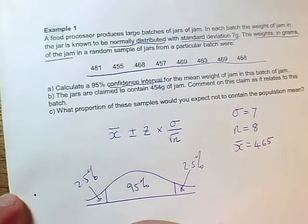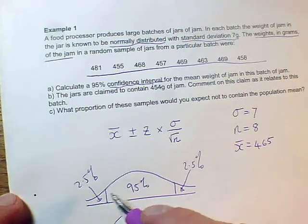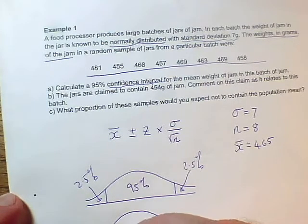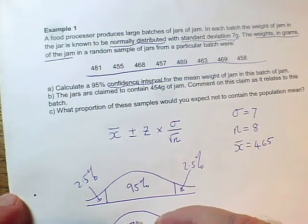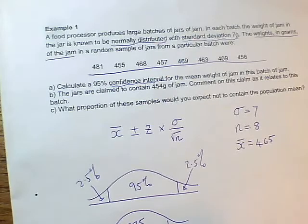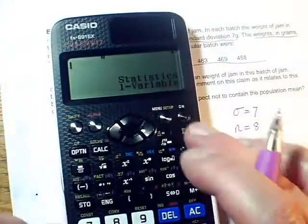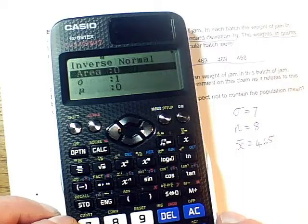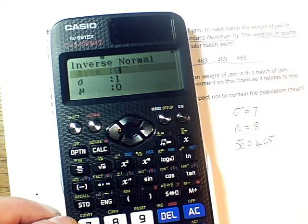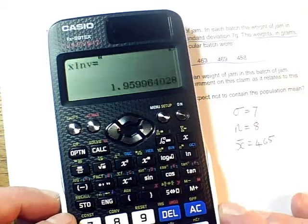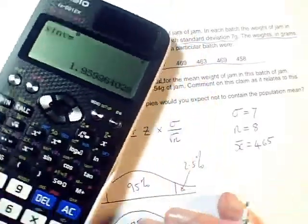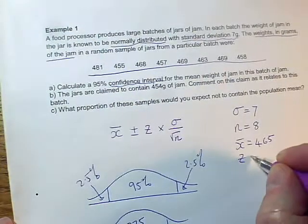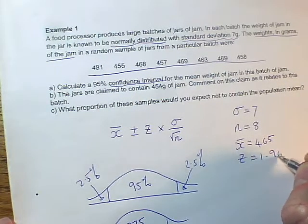So how do I get the z-value for this? Well, I need to think about this diagram. 95% plus 2.5% is 0.975, and my inverse normal can help with that. So on the calculator, if I go into inverse normal, and my area, what we said was 0.975, so we get a z-value of 1.960. So z equals 1.960.